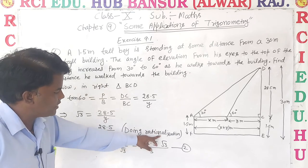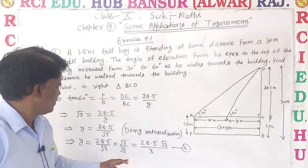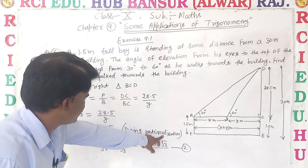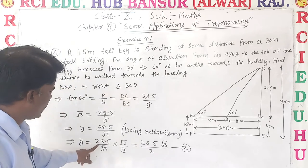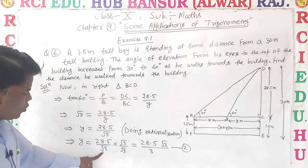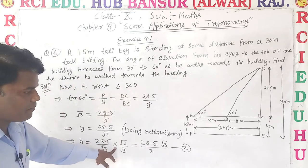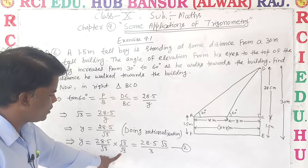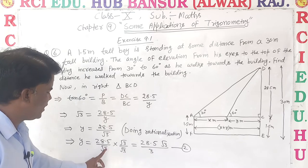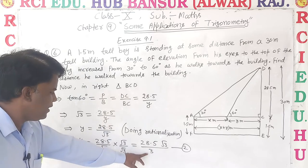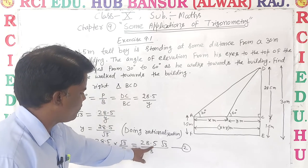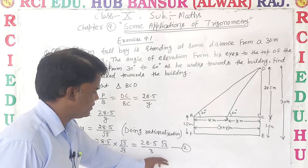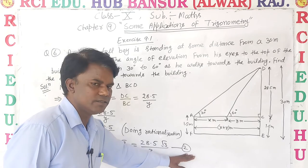Since root 3 is in the denominator, we do rationalization. Multiply numerator and denominator by root 3: 28.5 multiplied by root 3 upon root 3 into root 3. Root 3 into root 3 equals 3. So y equals 28.5 root 3 upon 3 — Equation 2.